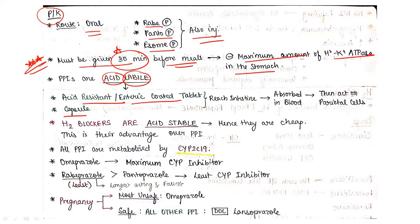Next point: H2 blockers are acid stable, hence they are cheap compared to PPIs. This is the advantage over PPI. Because PPI are acid labile, we have to give them in the form of capsule or enteric coated. But H2 blockers are acid stable, so they can be given as is, so they are cheaper. This is one advantage of H2 blockers over PPI. Now all PPIs are metabolized by your CYP2C19. Very important interaction I have discussed in general pharma.